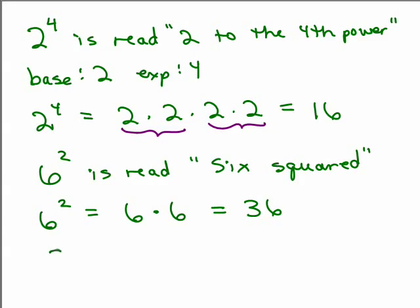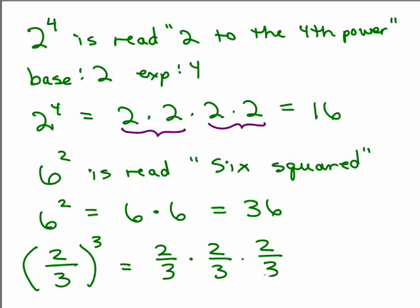What about when the base is a fraction? 2 thirds to the third power, which is also the same as saying 2 thirds cubed. It means you're multiplying 2 thirds, that's the base, times itself 3 times. So this means that's how many factors, each of these is a factor. How many factors of the base are multiplied together? Well you just multiply the numerators together, which is not 2 times 3, it's 2 times 2 times 2, which is 8, and 3 times 3 times 3, that's 9 times 3, which is 27.